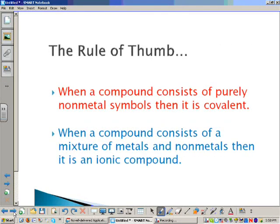Here's the application of the rule of thumb. When a compound consists of purely nonmetals, then it's covalent. When a compound consists of a mixture of metals and nonmetals, then it's ionic.